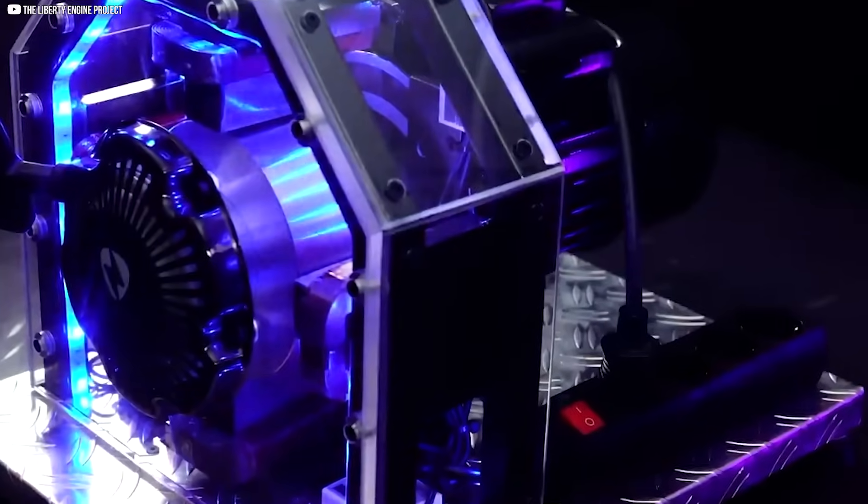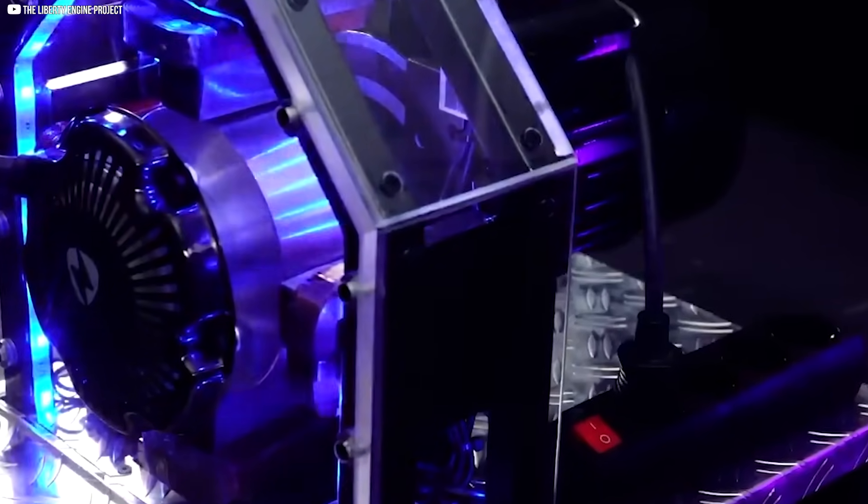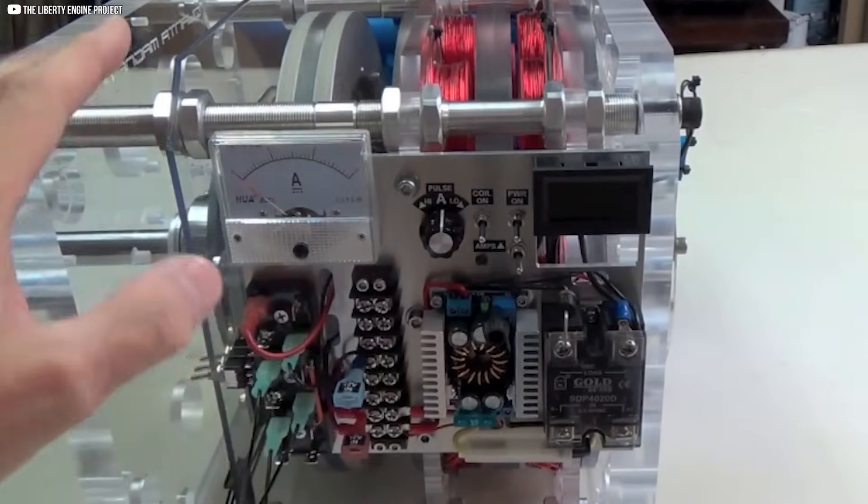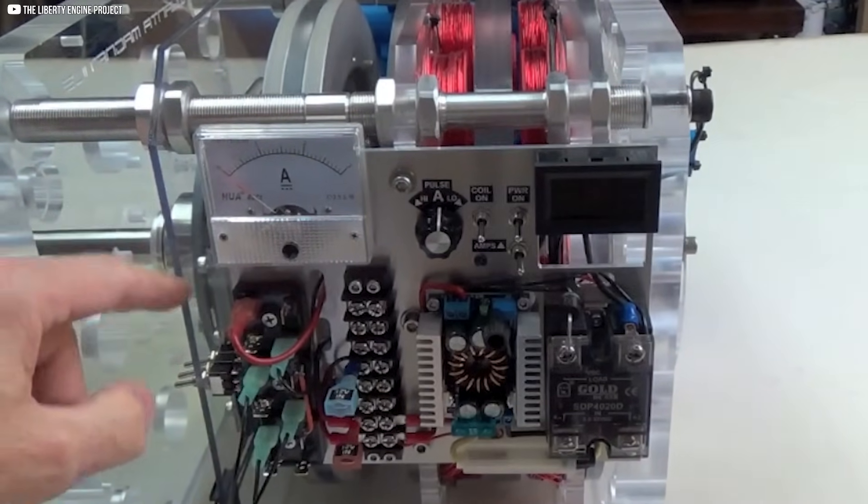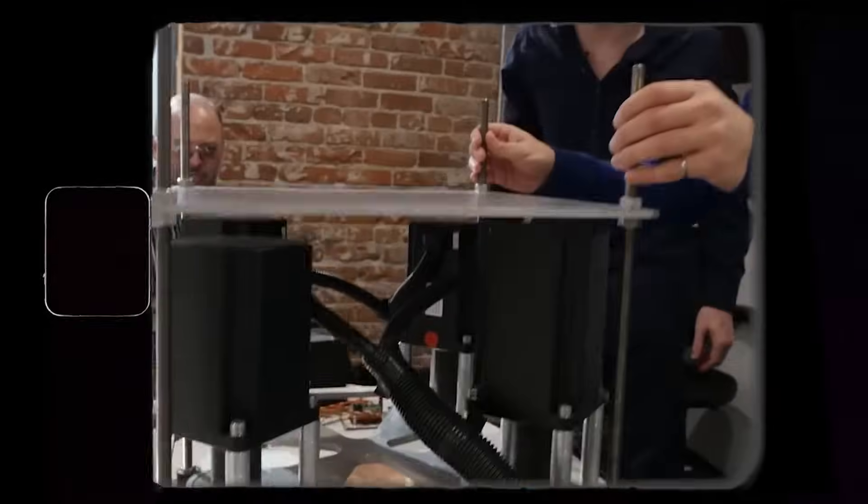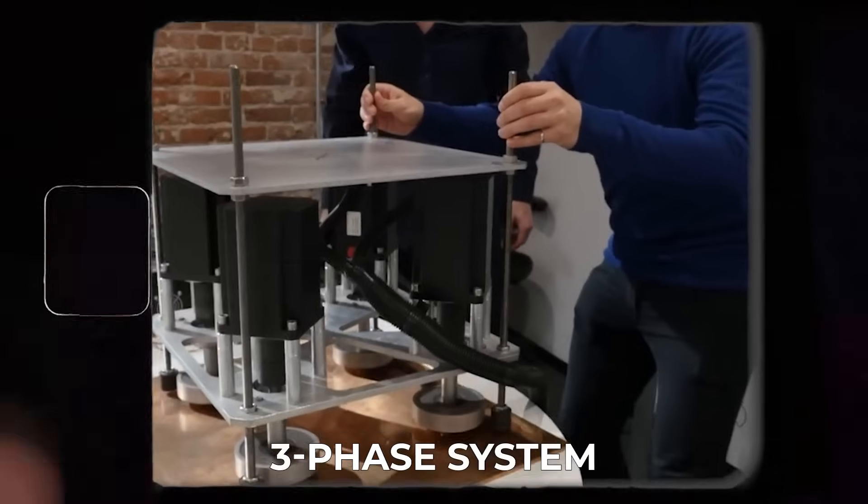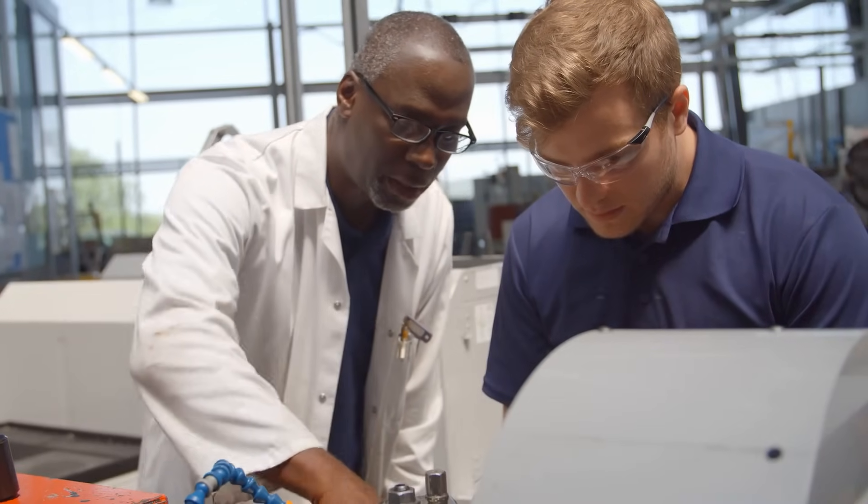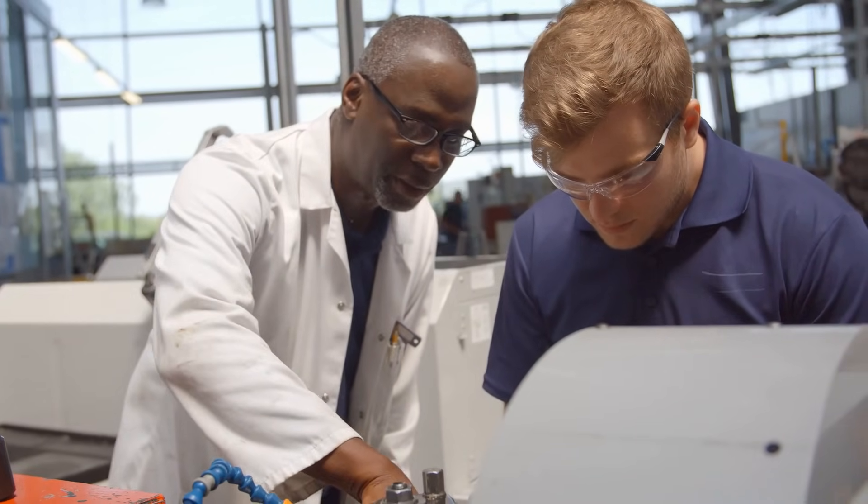To understand why the iGenerator is so revolutionary, we need to explore what makes its 9-phase technology different from anything on the market. Traditional generators typically operate on a 3-phase system. This means they produce 3 alternating currents that cycle through peaks and troughs.